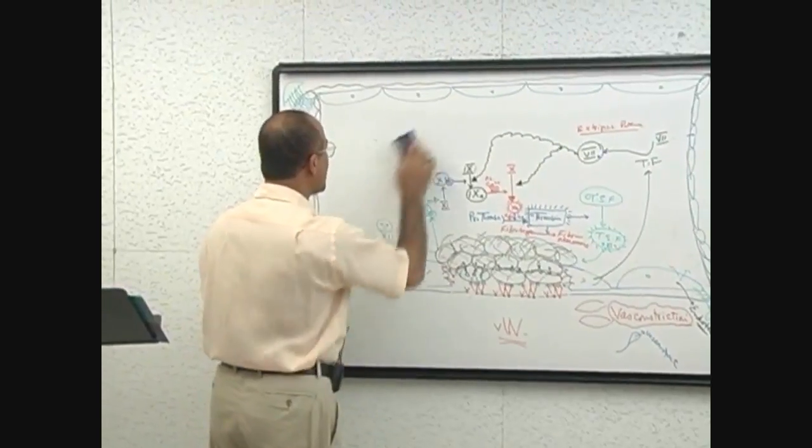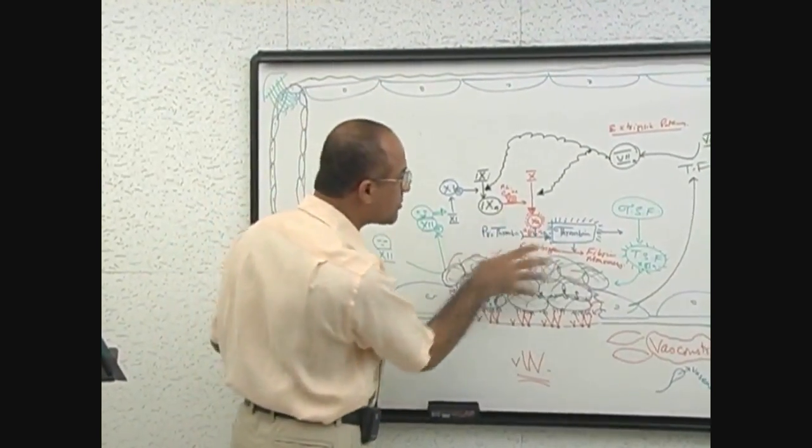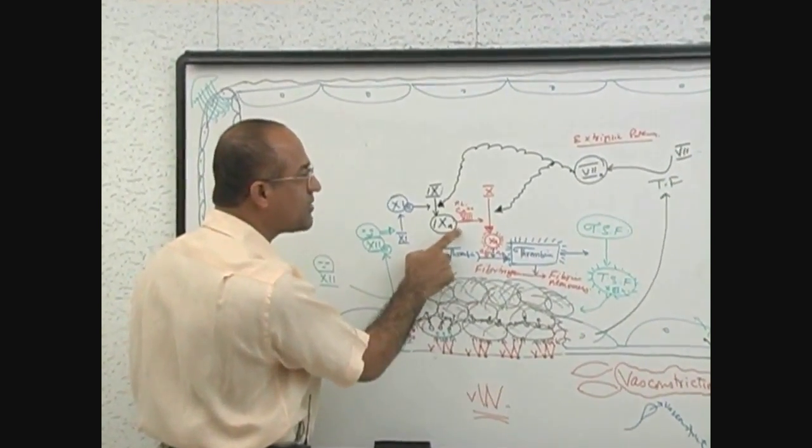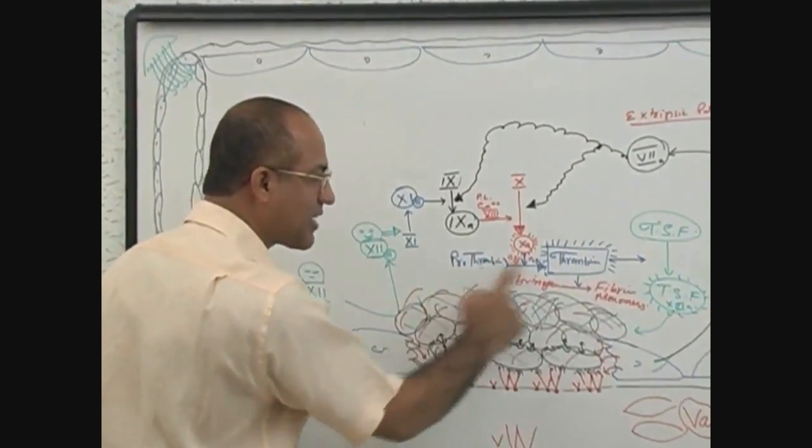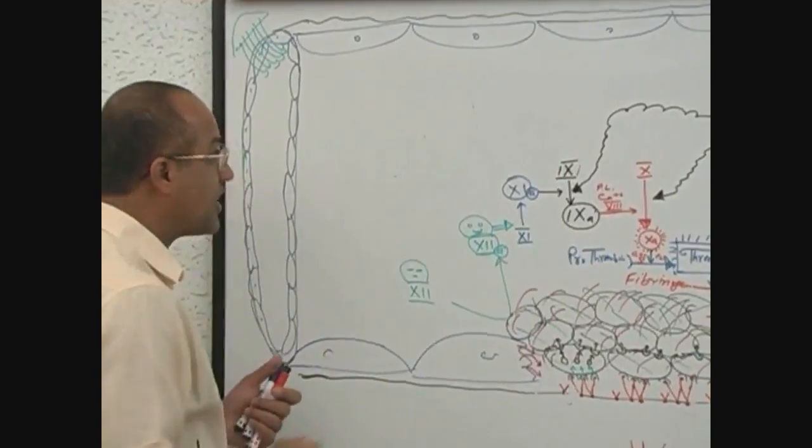I will just explain one step and the remaining you have to understand. The most important step to understand here is how factor 9 activates 10 and how factor 10 activates prothrombin. This is the most juicy thing in this whole game.